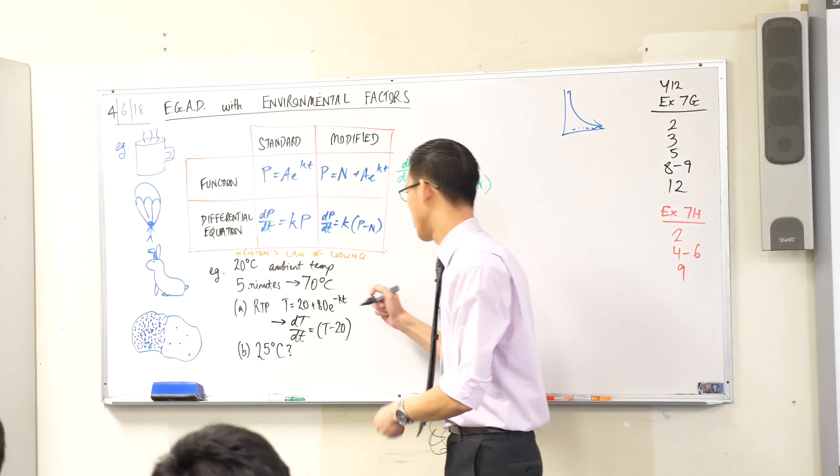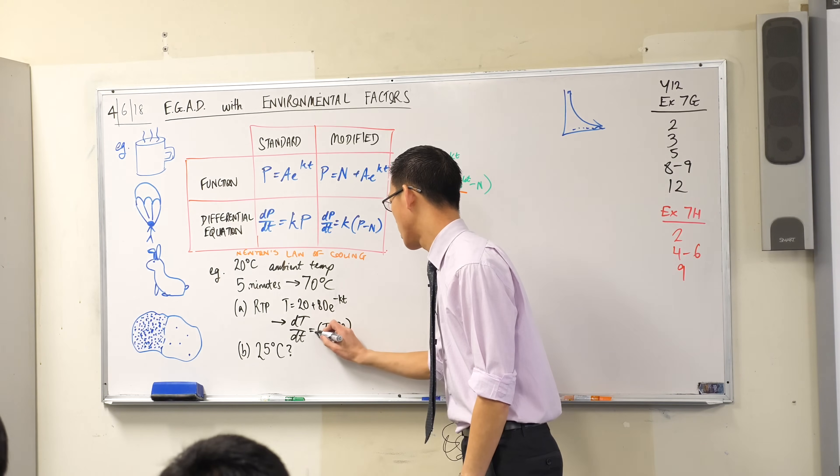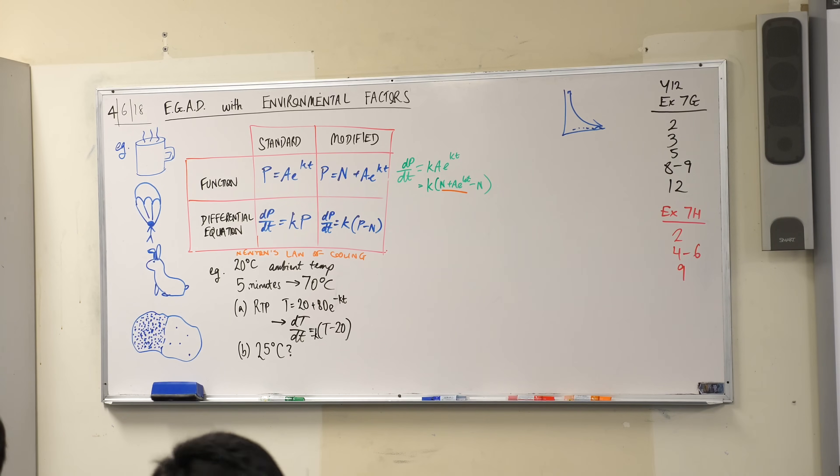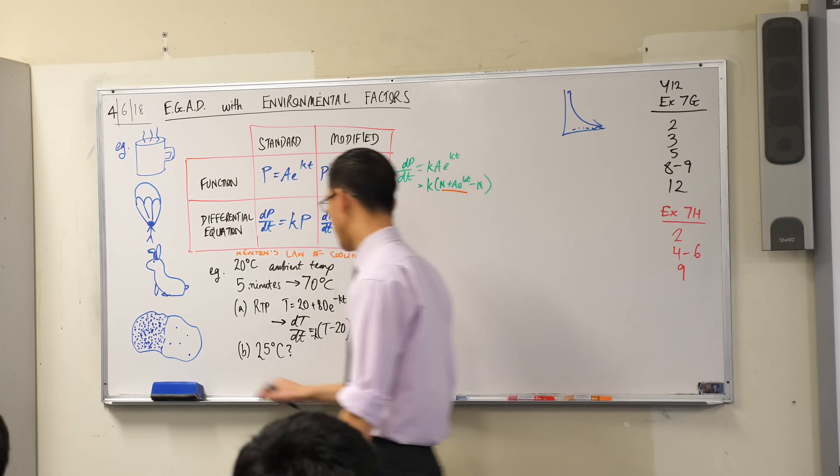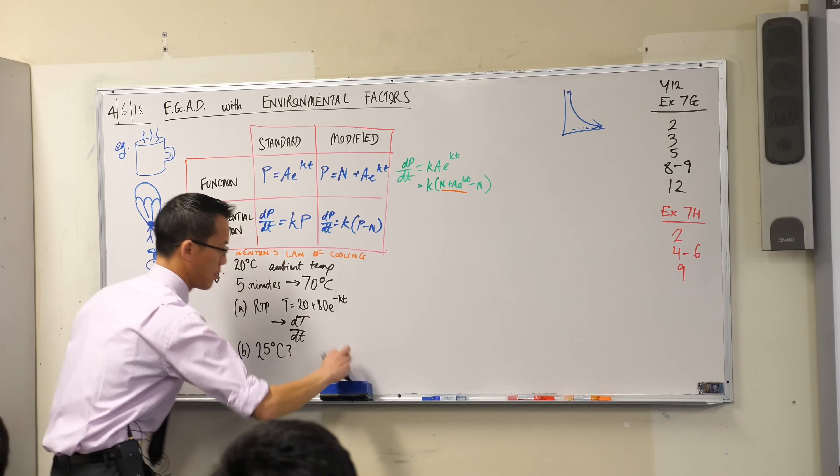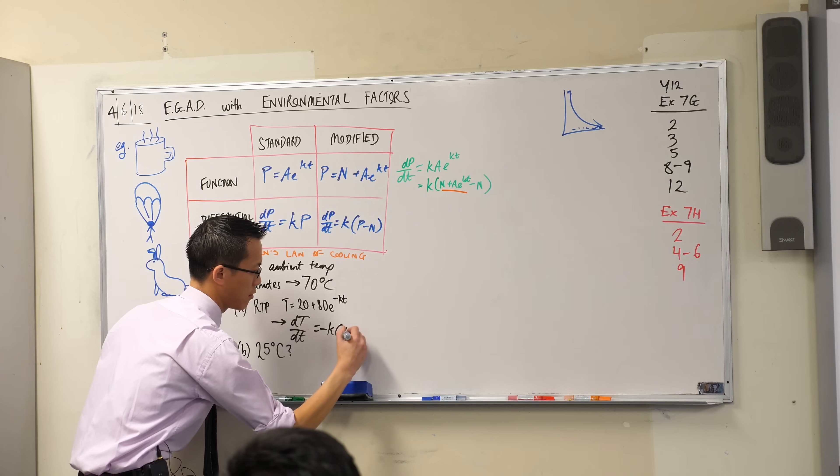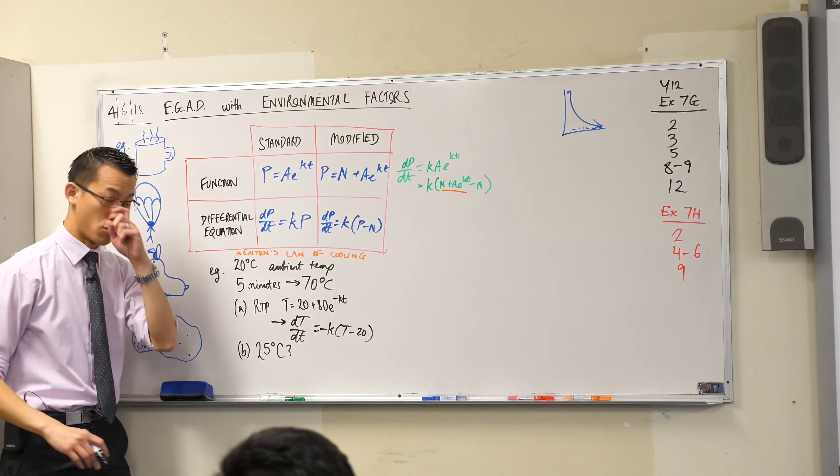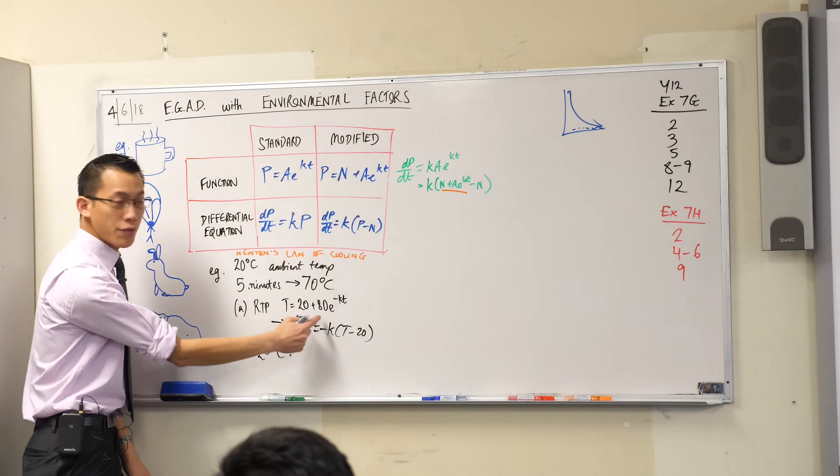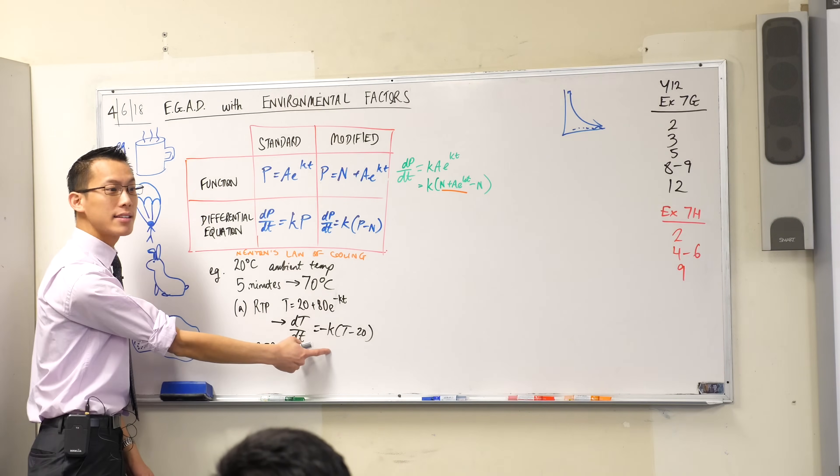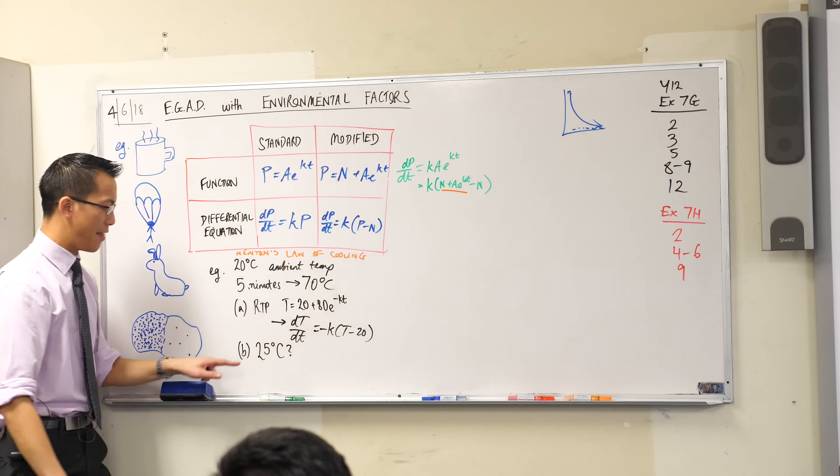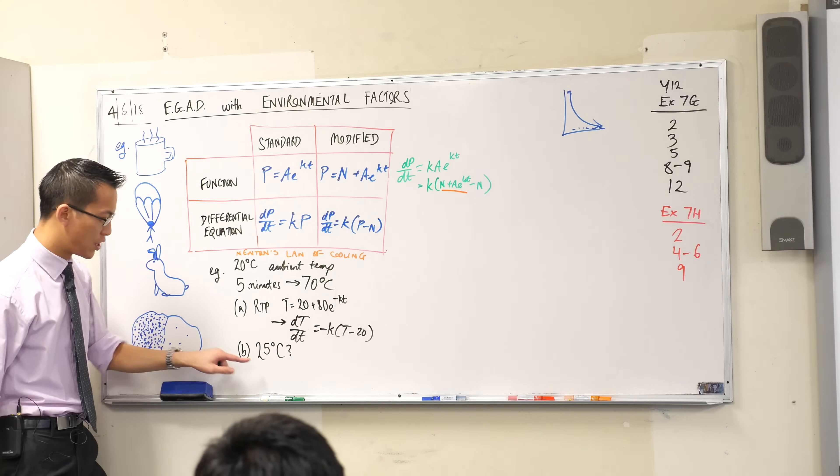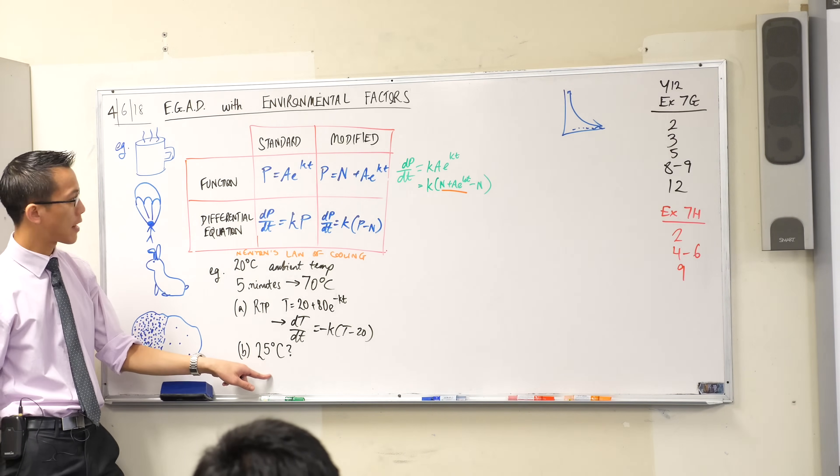Our first part is to prove that this function will satisfy this differential equation. The real question is, how long will it take to get down to 25 degrees? It took 5 minutes to get to 70 degrees. Thanks, it should be minus k. Let me rewrite that. Let's prove that this function satisfies this differential equation, and secondly let's find out how long it's going to take to get to this target temperature.